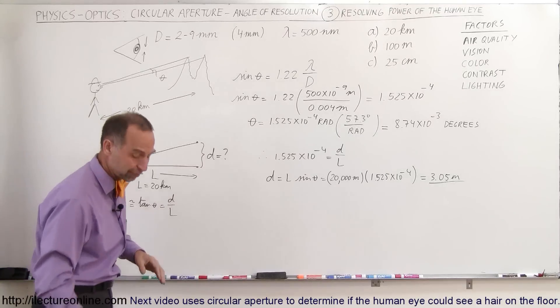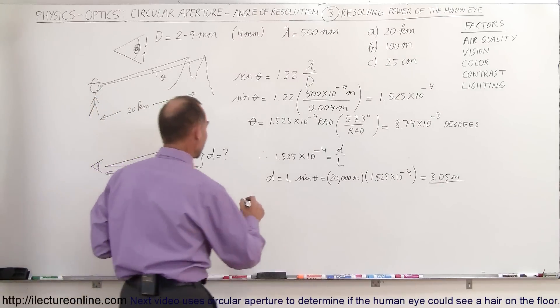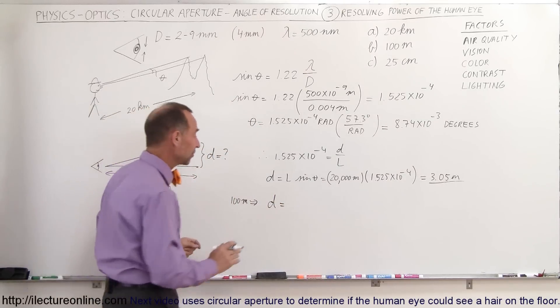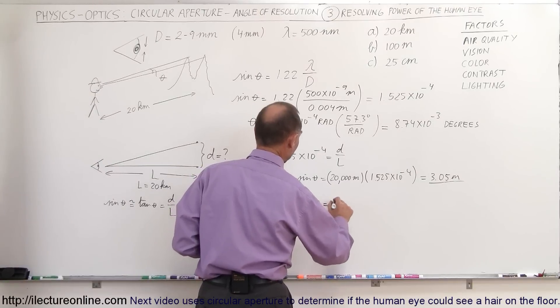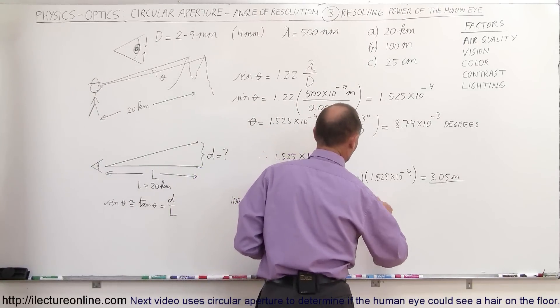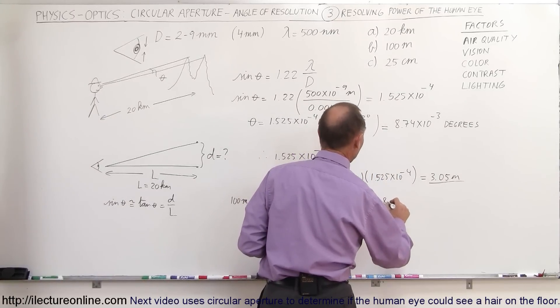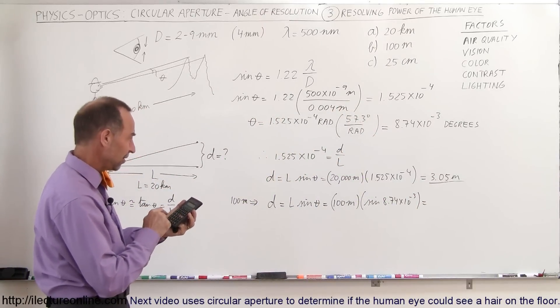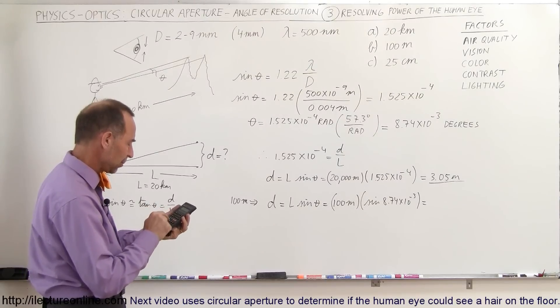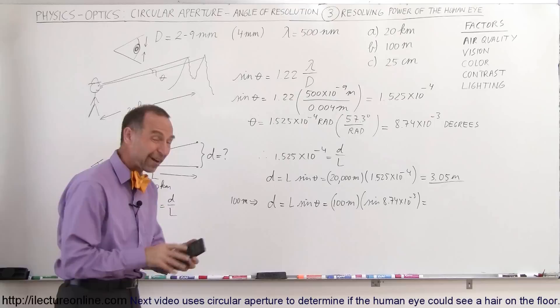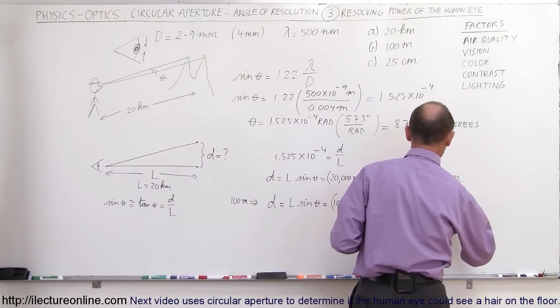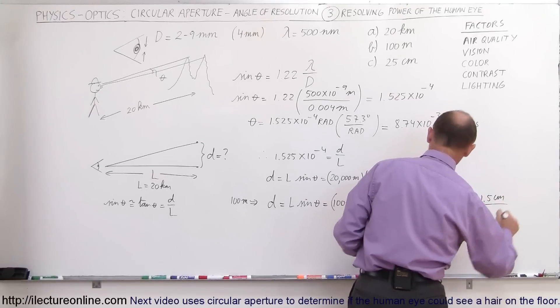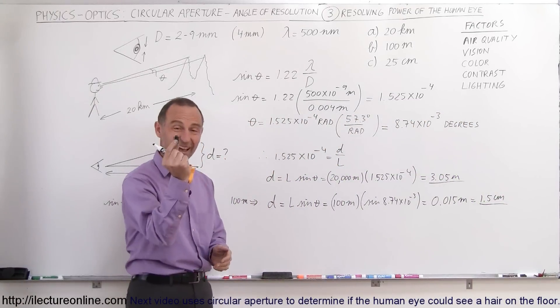Well, let's see what we can distinguish at a distance of 100 meters. Same thing, the resolution angle would be the same, but at 100 meters. So at 100 meters, we can see that the separation distance of two objects that we see across the length of a football field is equal to L times the sine of theta. So in this case, that would be 100 meters times the sine of 8.74 times 10 to the minus 3 degrees. So we get 8.74 e to the minus 3, take the sine of that and multiply it times 100. And we get 1.5 centimeters. So it's equal to 0.015 meters, which is equal to 1.5 centimeters.